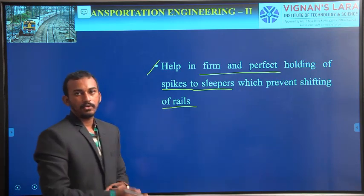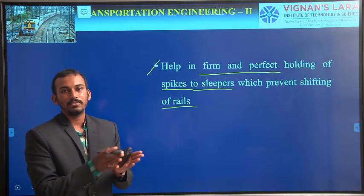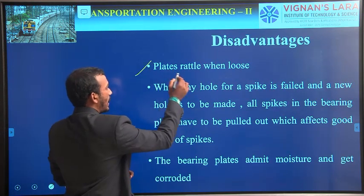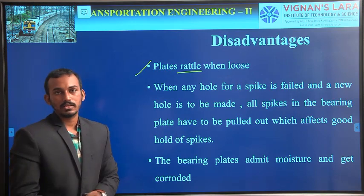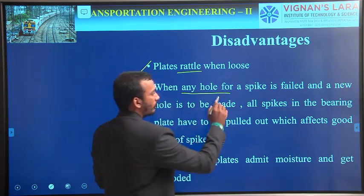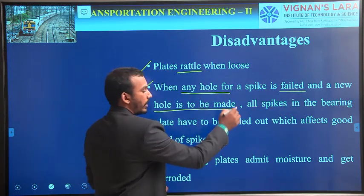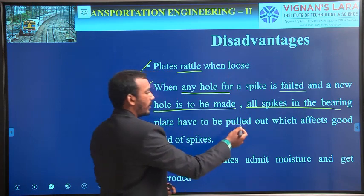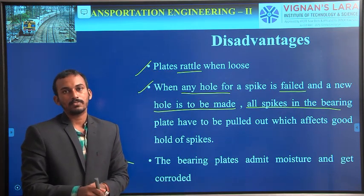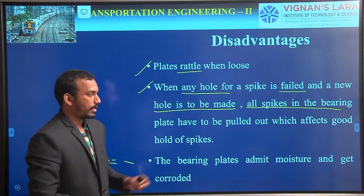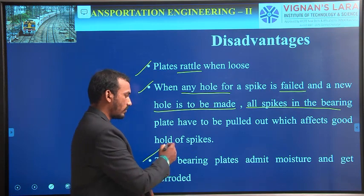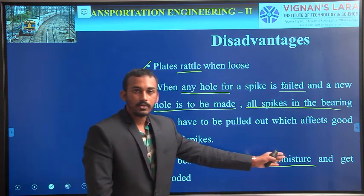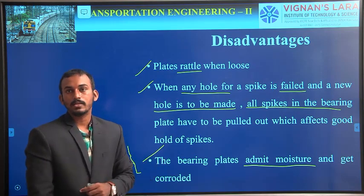If the spikes get loosened, the gauge may be disturbed and the rails may move away from position. Coming to the disadvantages: first, plates rattle when they get loose. Second, if any one hole of a spike fails and a new hole is to be made, then all spikes in the bearing plate have to be pulled out — since we strongly fix the spikes, if one fails we need to pull back all the spikes, which may loosen the remaining spikes. And the last disadvantage is the bearing plates admit moisture. The bearing plates are made up of steel, so they absorb moisture and get corroded.